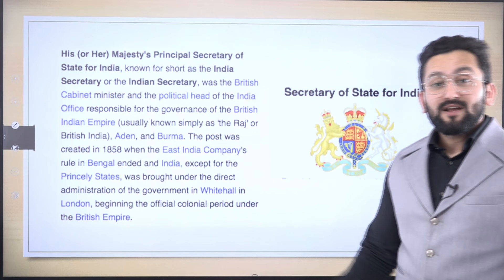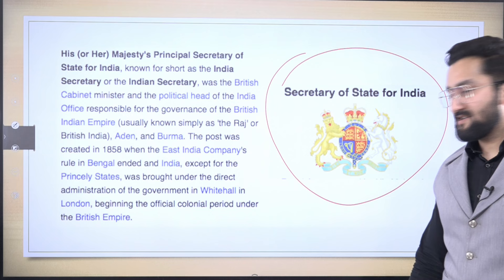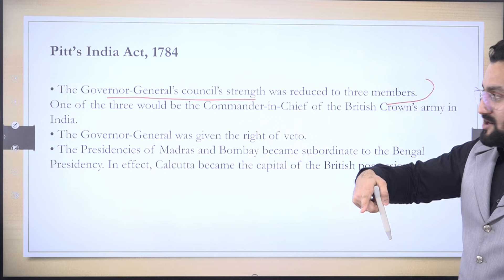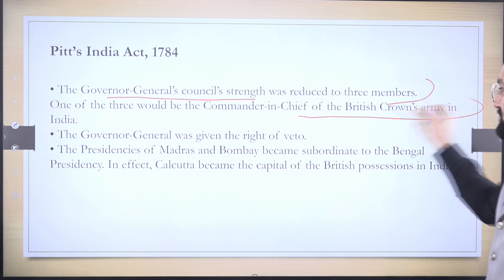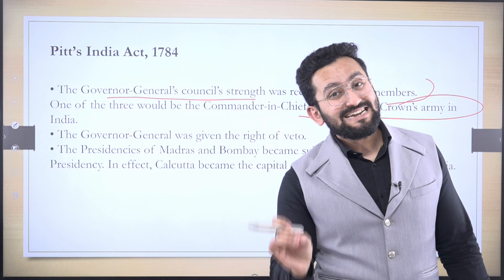As I told you, there is a difference between Secretary of State and Secretary of State for India. Secretary of State for India was a position created in the Government of India Act 1858 — but we are still in 1784. Other provisions: Governor General's Council strength was reduced to three members, and one member was to be the Commander-in-Chief of British Crown's Army. This means even while giving relaxations to the Governor General of Bengal, they were also keeping a tab — keeping accountability.